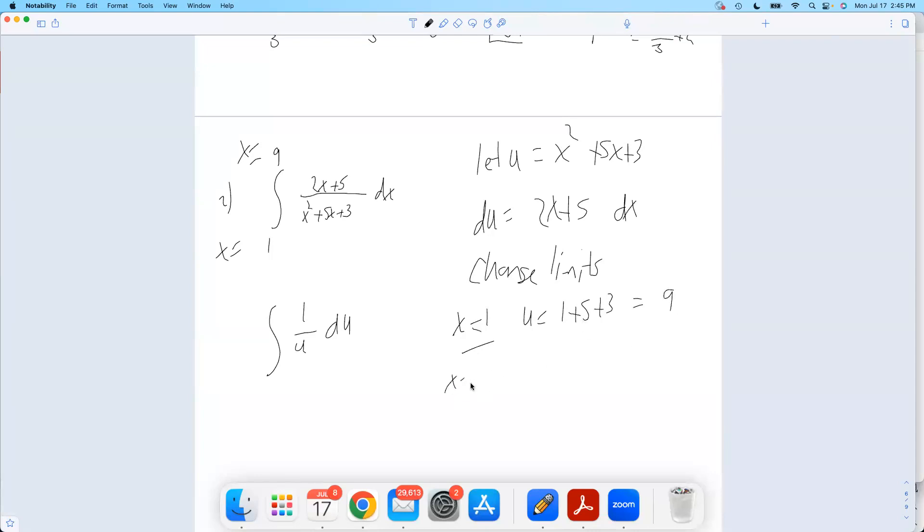And when x equals 9, might need my calculator for this one, u will be 81 plus 45 plus 3. I'm plugging in 9 there, so that would be 126, I think we'll get 129. Yeah, that looks right. So those will be my new limits, 9, 129.